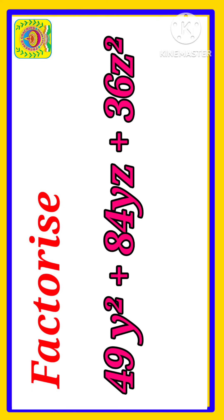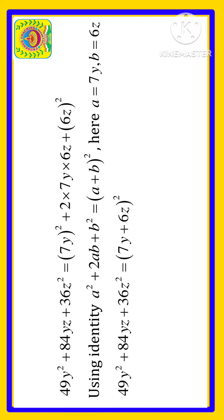So here you are asked to factorize 49y² + 84yz + 36z². Here we have 49y² which we can write as 7 into 7 is 49 multiplied by y into y is y².